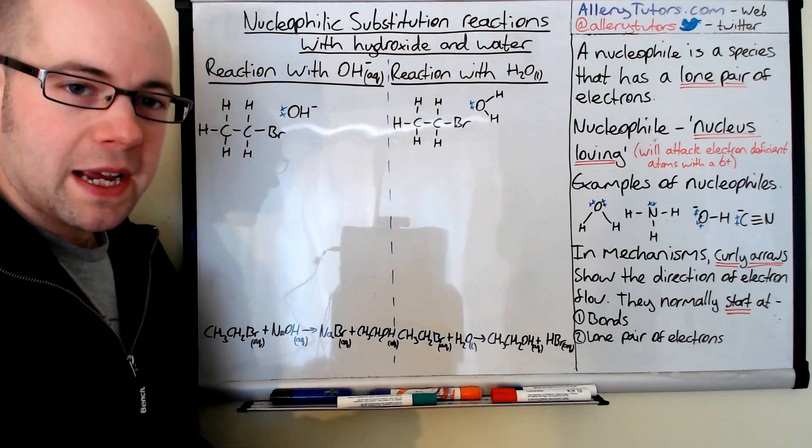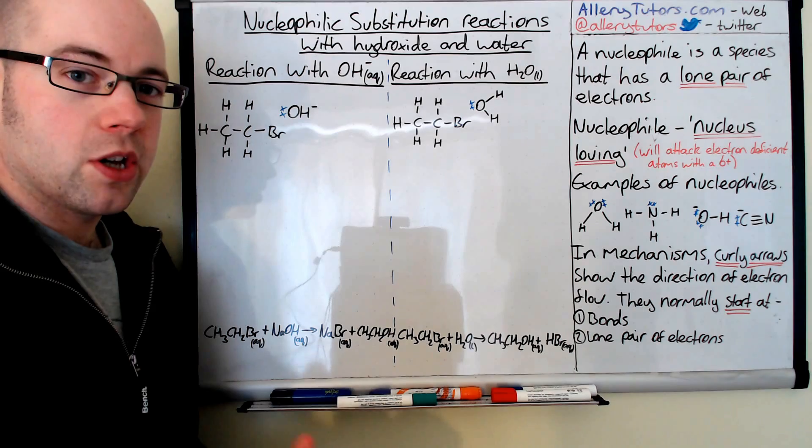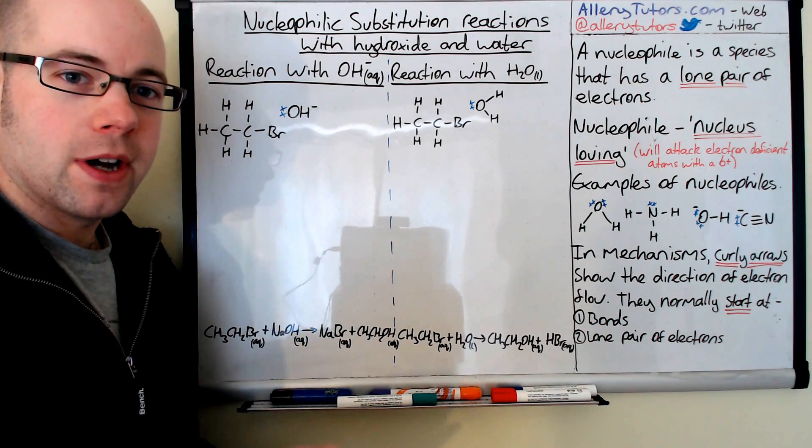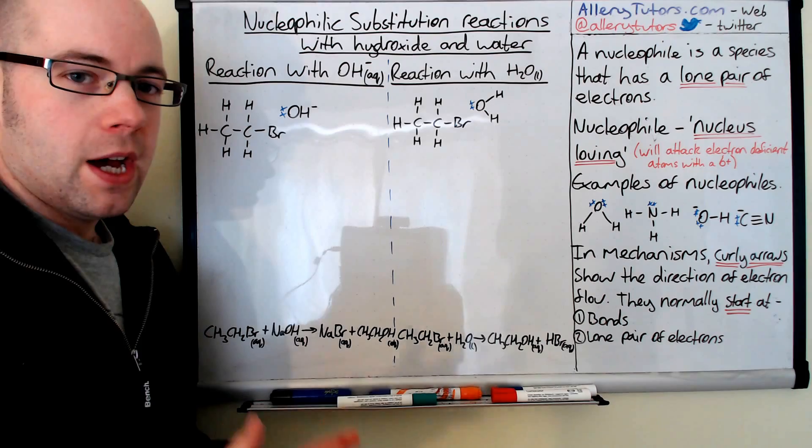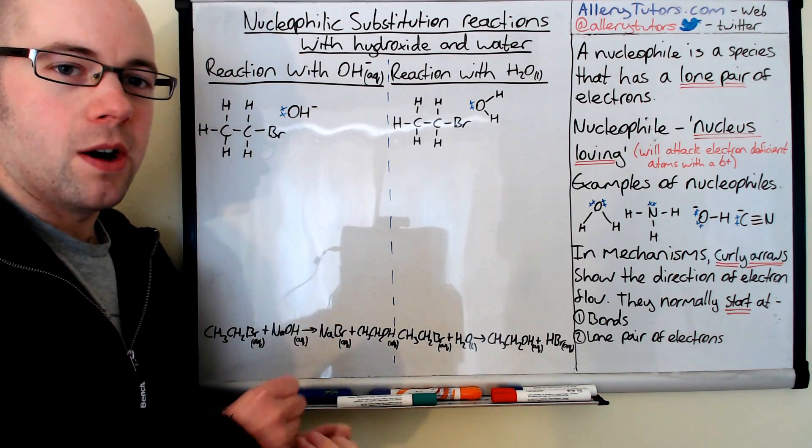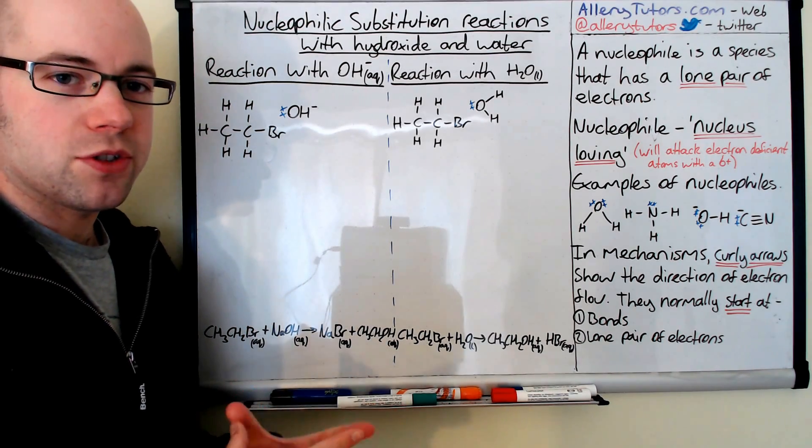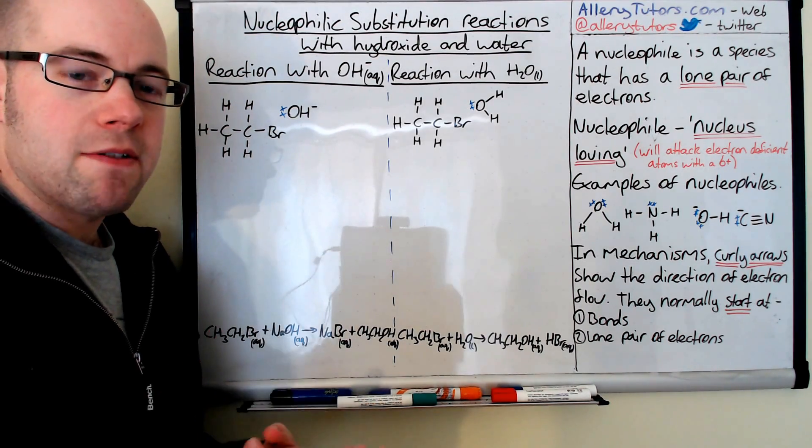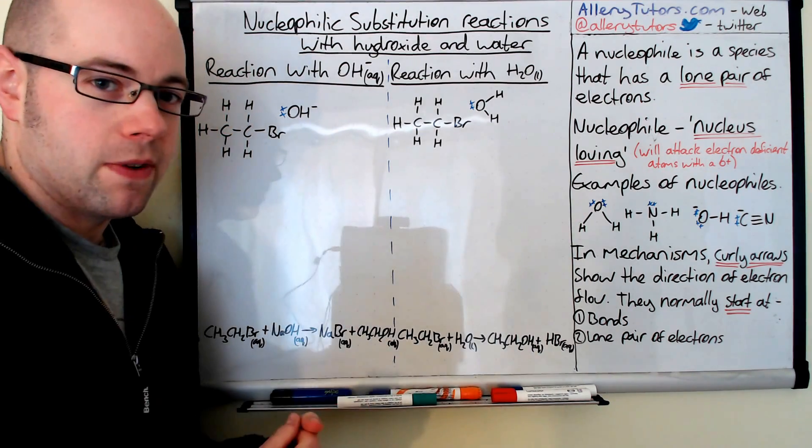So we're going to draw mechanisms. Now you'll see some curly arrows drawn and it's really important that we need to know what a curly arrow is. A curly arrow is basically the movement of electrons and it goes from an area of high density electrons to an area of low density electrons. Places where curly arrow starts are generally bonds and areas with a lone pair of electrons, for example, a nucleophile.